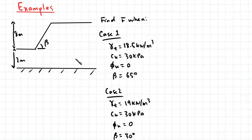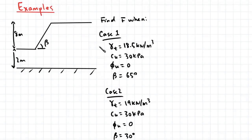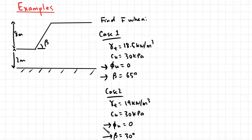Let's now consider an example where we can use Taylor's charts. We have a slope with a vertical height of 8 meters, and we're interested in finding the factor of safety for two cases. In case one, the unit weight of the soil is 18.5 kN/m³, the undrained cohesion is 30 kPa, the undrained angle of friction is zero degrees, and the slope angle is 65 degrees. In case two, the total unit weight is 19 kN/m³, the undrained cohesion is 30 kPa, the undrained angle of friction is zero, and the slope angle is 30 degrees.